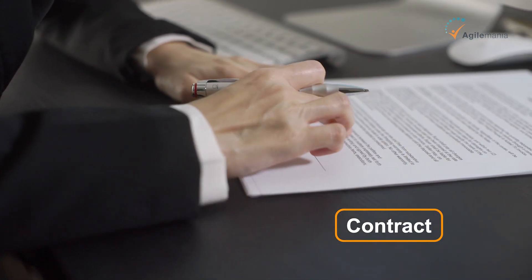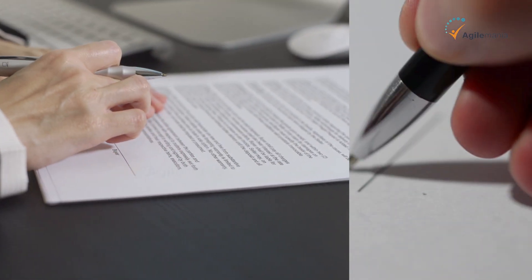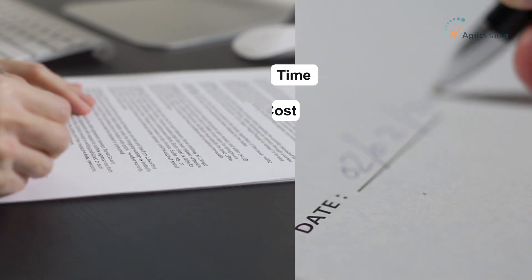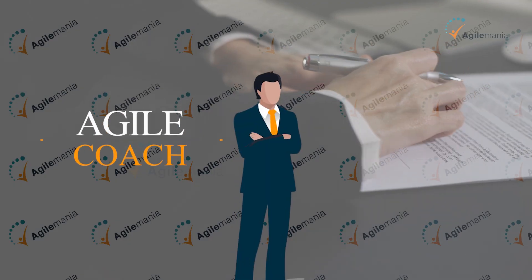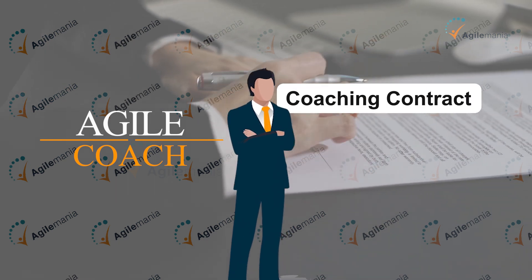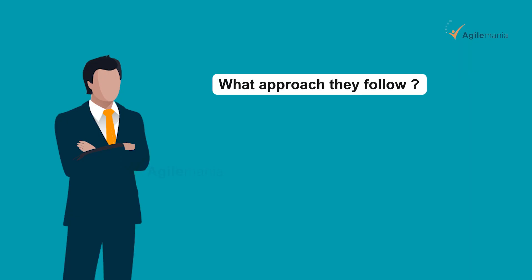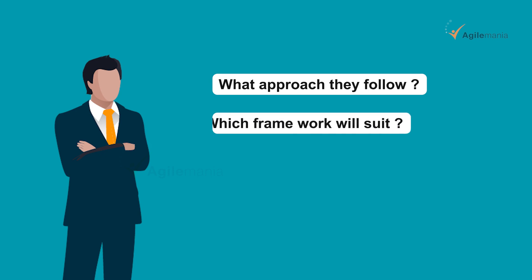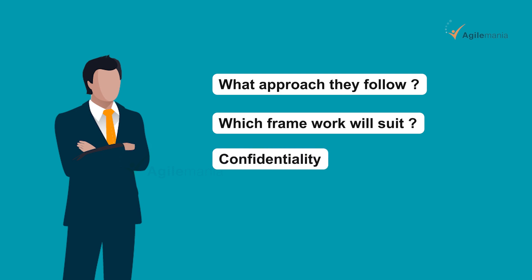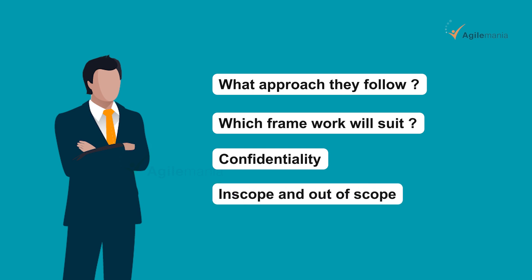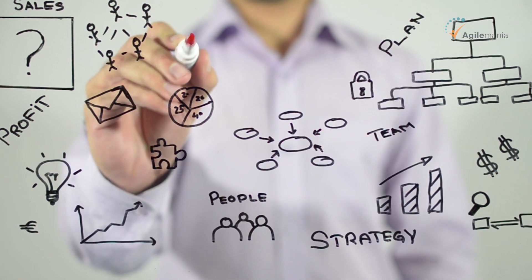After the feasibility study, we devise a contract. Any contract will have time, cost, and scope. But on top of that, an agile coach must be very specific in the coaching contract about what approach they are going to follow, which framework will be used, and confidentiality agreements. The scope should clearly define what is in scope and what is out of scope based on the problem area.